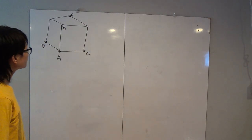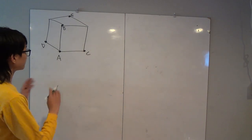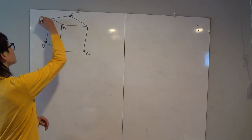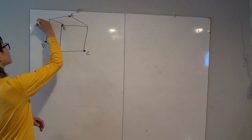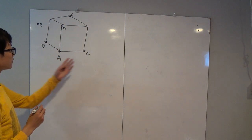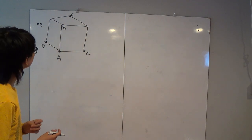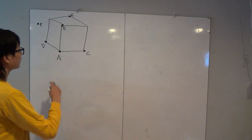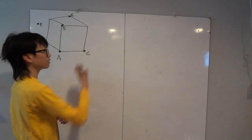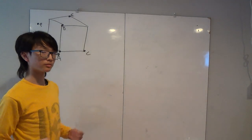We're also given that there is some point P somewhere in space. For now I'll draw it up here, but remember it could be anywhere — it could be over here, over there, or even inside the cube. And this point P, we're given four pieces of information about it.